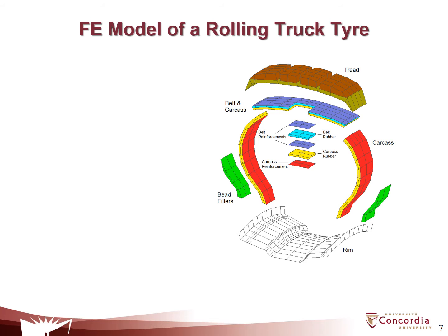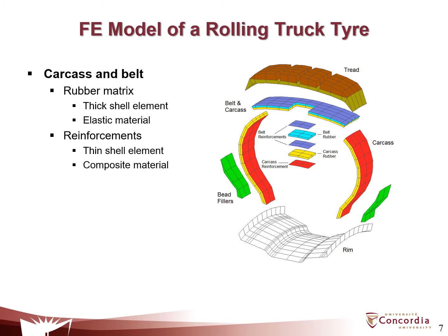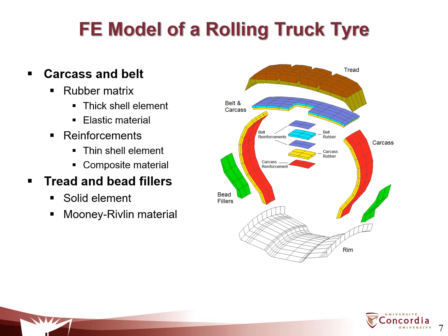A three-dimensional finite element model of a rolling truck tire was developed using Elsdyna and applied for modal analyses to predict the natural frequencies and the corresponding mode shapes for a radial ply truck tire. The carcass and belts are considered as composite plies including rubber matrix and reinforcements. The rubber matrix is modeled using thick shell elements with elastic materials, and the reinforcements are described using thin shell elements considering orthotropic material properties. The tread and bead fillers are modeled using solid elements with a Mooney-Rivlin rubber constitutive model.